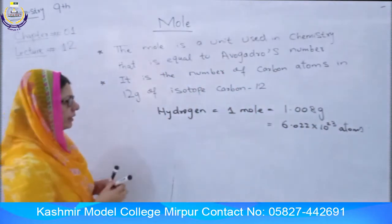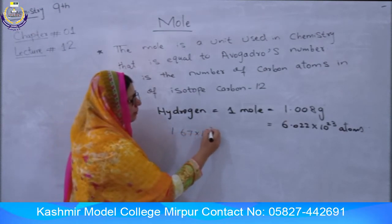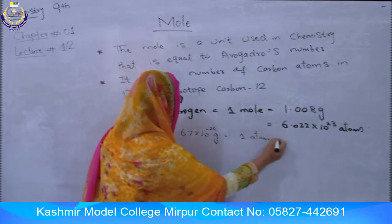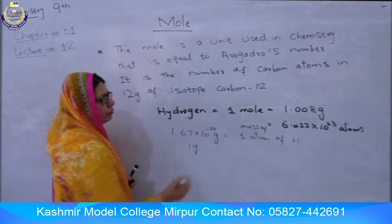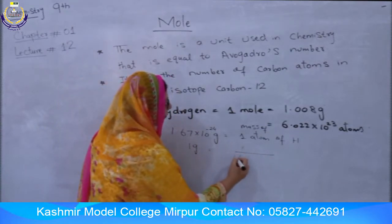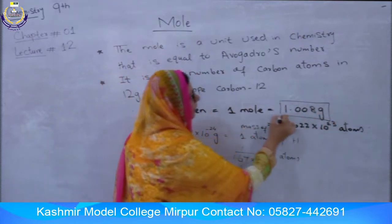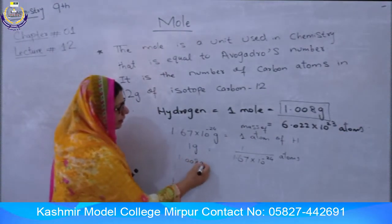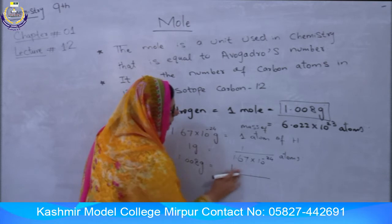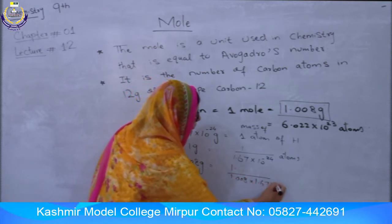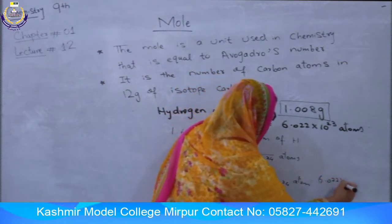In terms of the value of 1 mole, if we look at the mass of 1 atom of hydrogen — it is 1.67 × 10⁻²⁴ grams. The mass of 1.008 grams divided by 1.67 × 10⁻²⁴ gives us 6.022 × 10²³ atoms.